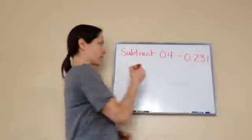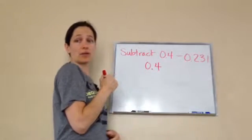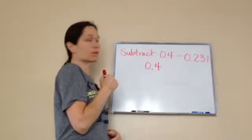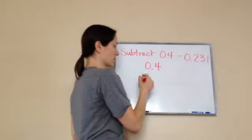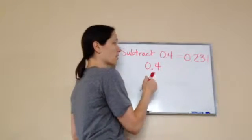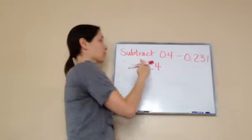You line them up vertically. Very good, so let's do that. 0.4, what am I lining up? What do you mean? What am I going to line up? Oh, the two numbers, so the next one would be 0.231. Yes, but what am I lining up? The decimals.